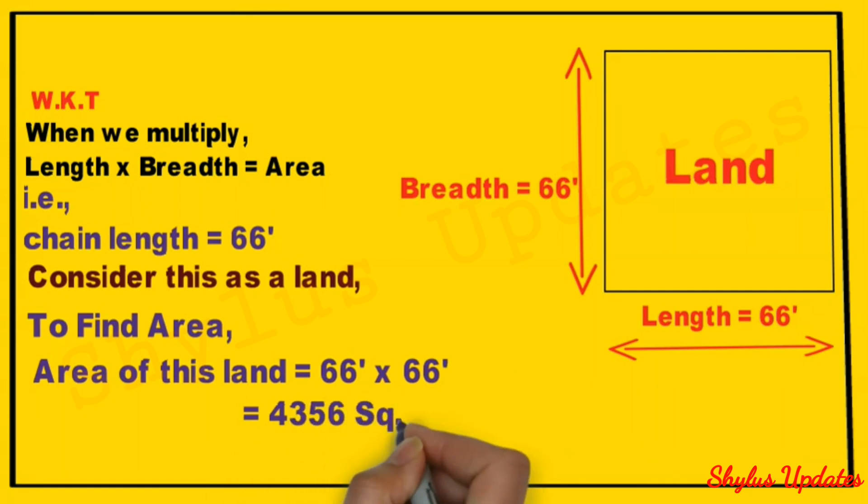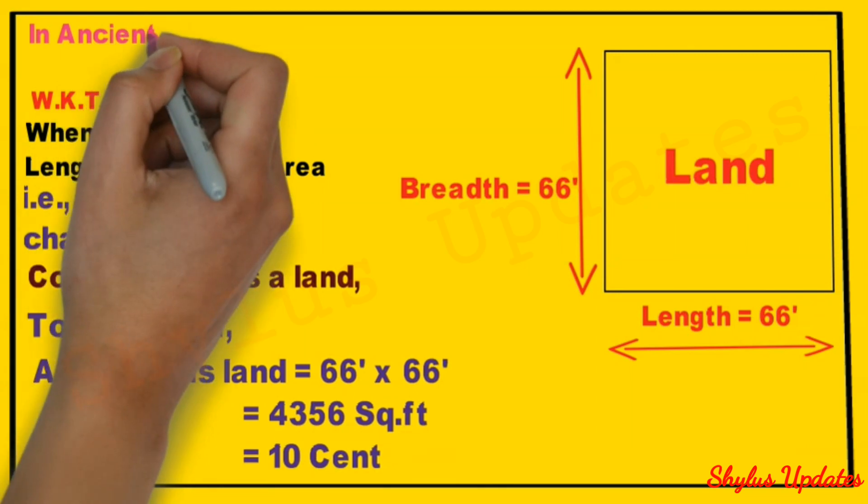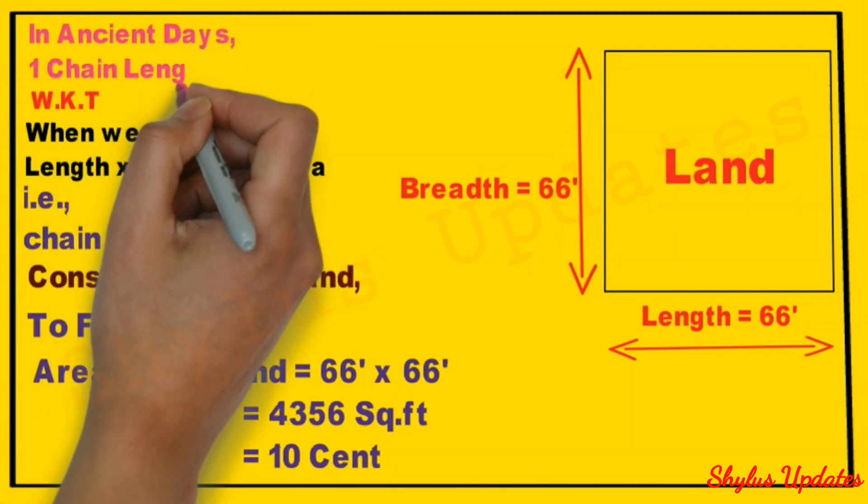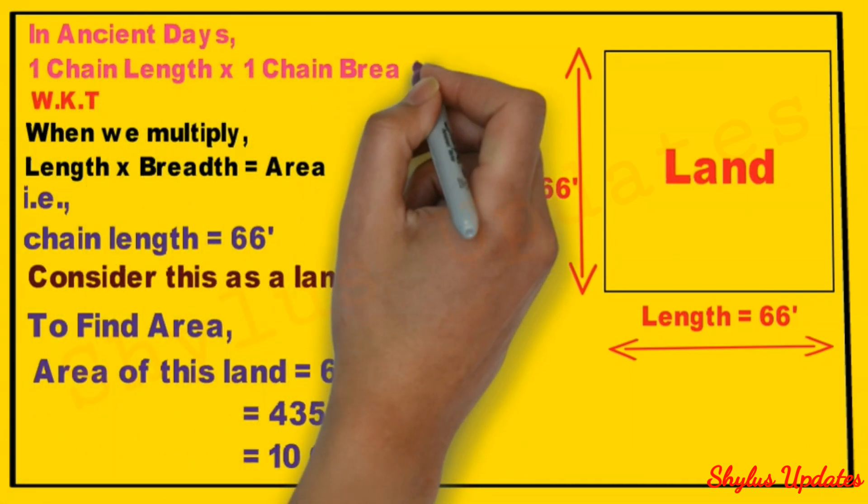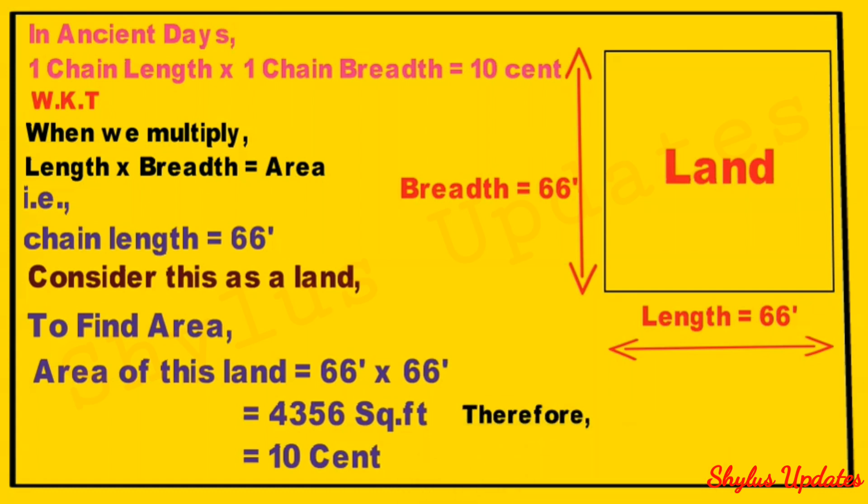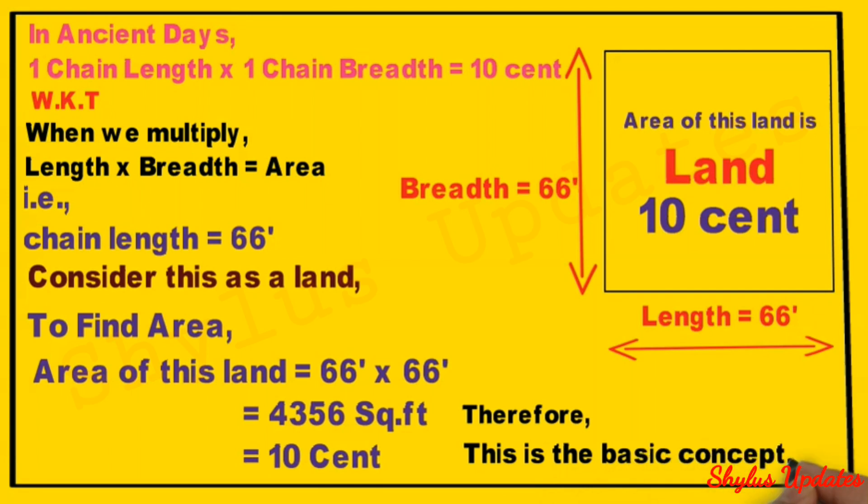4,356 square feet, and this is equal to 10 cent. In ancient days, one chain length into one chain breadth is equal to 10 cent. Therefore, area of this land is 10 cent. This is the basic concept.